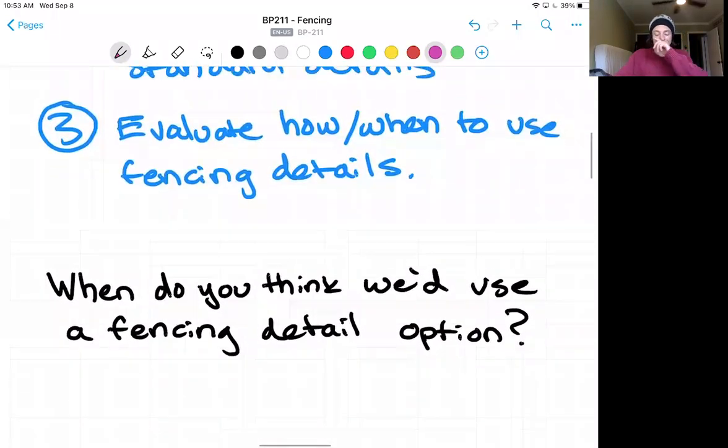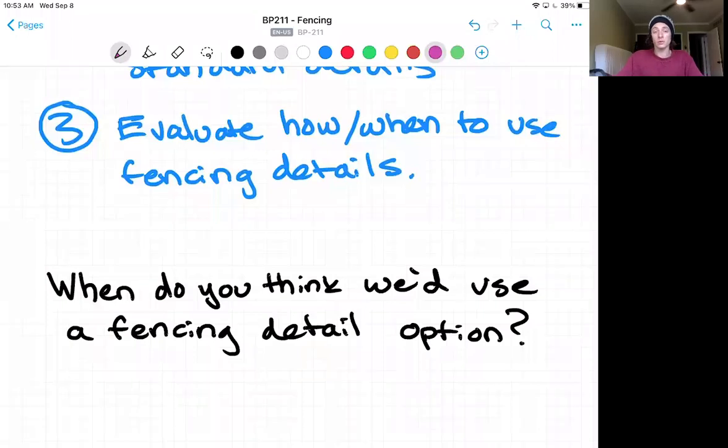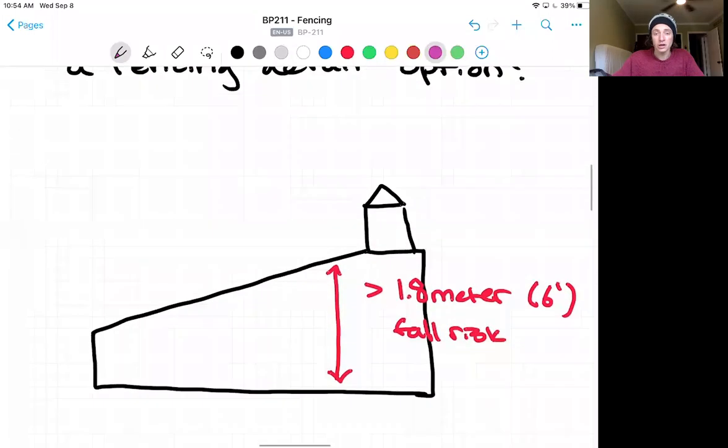So first I'd like to ask, when do you think we'd even use the fencing detail option? Right, we're going to want to use the fencing detail option similar to during the construction and safety process where we need scaffolding or benching when there is greater than a six foot or 1.8 meter fall risk.